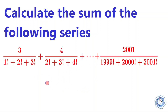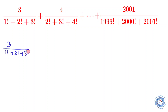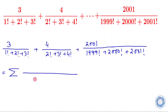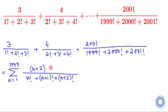Let us rewrite the given series. If you look at the series very carefully, it is simple to identify the nth term. The nth term of the series is given by (n plus 2) over (n factorial plus (n+1) factorial plus (n+2) factorial), where n goes from 1 to 1999.